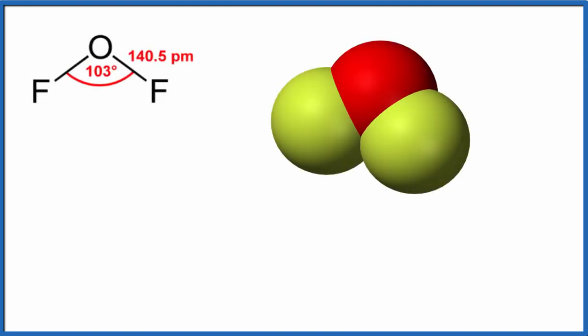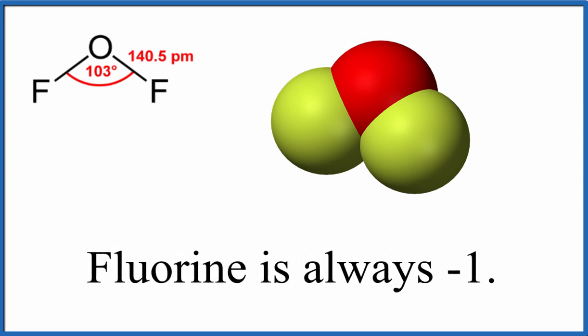OF2, that's another exception. We know that fluorine is always minus one. So we have this OF2 with two fluorines that are minus one. The oxygen has to be a plus two. That's because the fluorine's so electronegative that it means the oxygen is going to have to have a positive oxidation number.